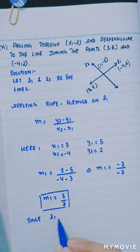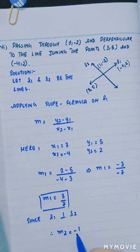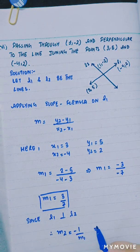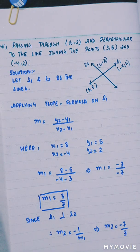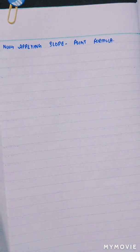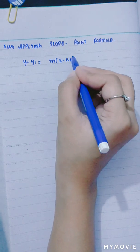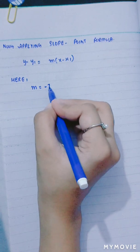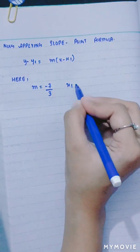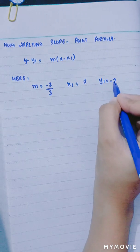Since L1 is perpendicular to L2, therefore M2 is the negative reciprocal of M1, so M2 equals minus 7 over 3. Now applying the slope point formula: y minus y1 is equal to M into x minus x1. Here M is equal to minus 7 over 3, x1 is 1, and y1 is minus 2.